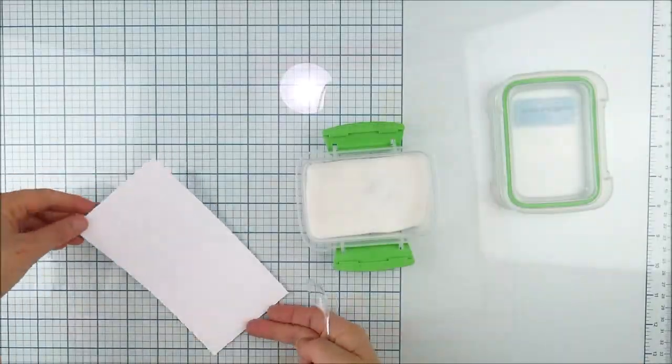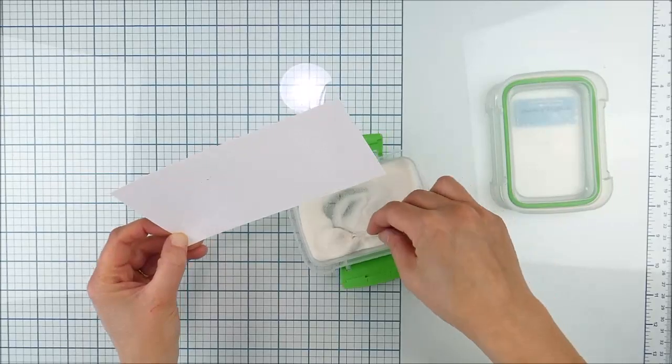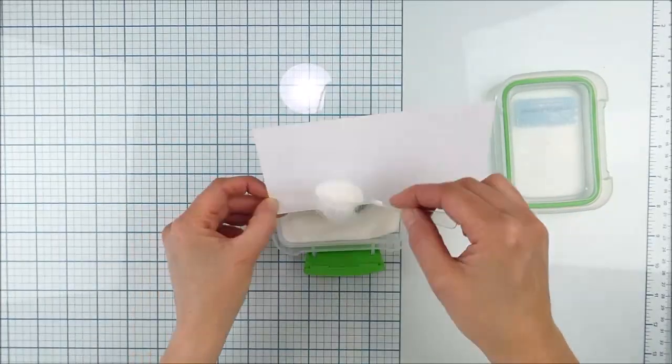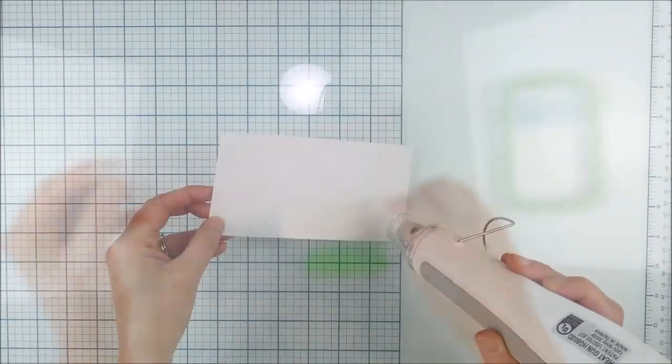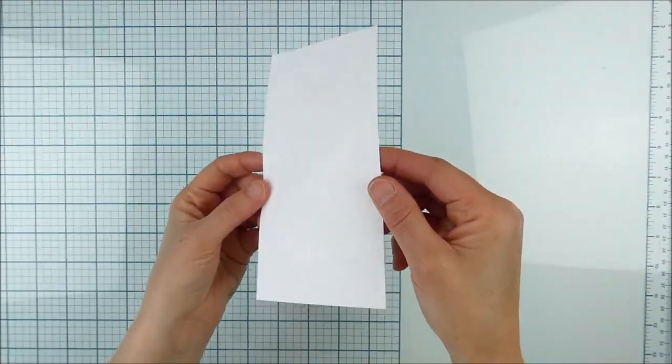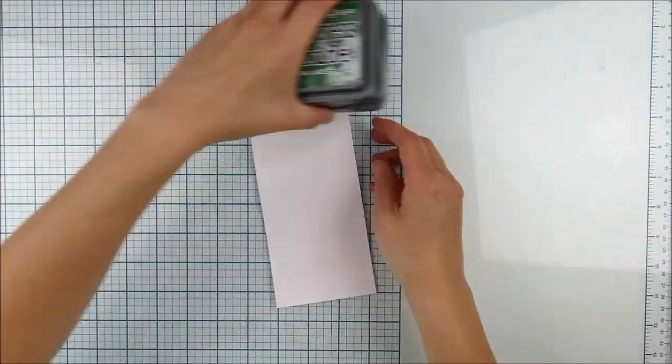I'm going to stamp these with clear embossing ink and then use clear embossing powder. I found that if you're using white cardstock, clear embossing powder is the easiest way to keep those images crisp and clear because you can wipe off the extra ink and it'll just show that white cardstock underneath.